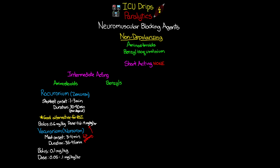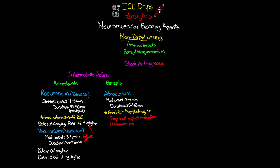Now let's talk about our benzyl subclass. The first is atracurium, which has a medium onset of about 3 to 4 minutes and a duration of about 35 to 45 minutes. One great advantage is that it's a really good option for patients who have liver or kidney disease, because these benzyls are metabolized through a complex process within the plasma — though temperature and the patient's pH can have an impact on this metabolism. One important concern with atracurium is that it can cause a histamine release, leading to hypotension, tachycardia, and flushing — though it is not an anaphylaxis reaction. Because of this, we really don't use this medication often.